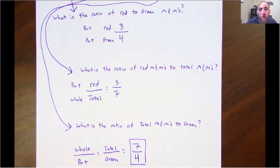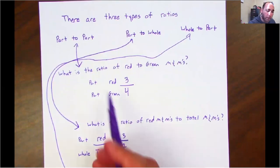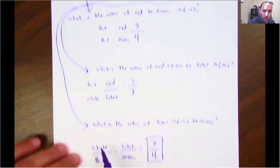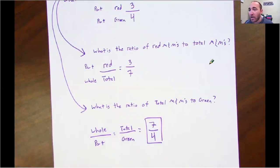So again, a ratio compares two different things. There are three different ways of writing it, and there are three types of ratios. We have part to part, part to whole, whole to part. All right, guys. I hope this video helps. I will talk to y'all soon. Bye, guys.